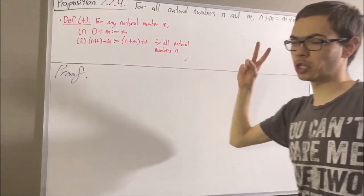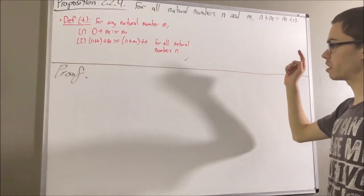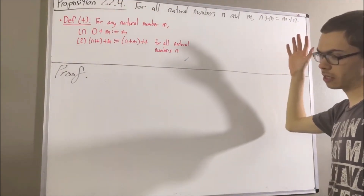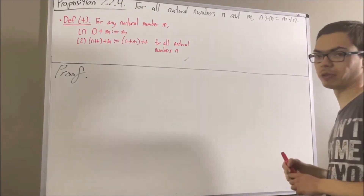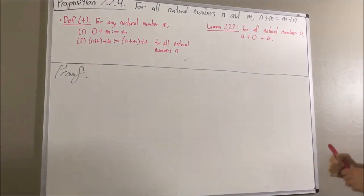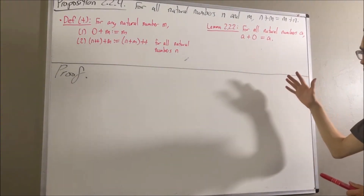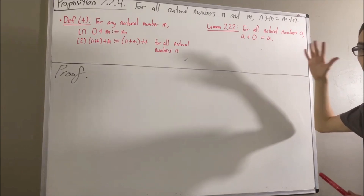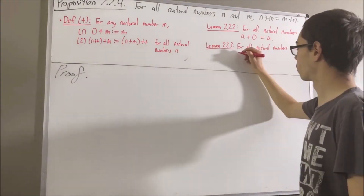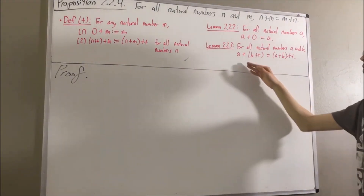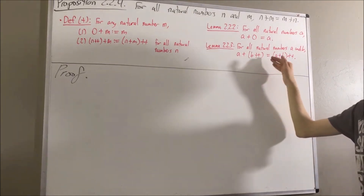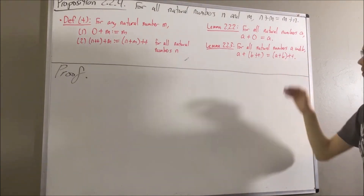In proving this, we are going to rely on two lemmas. The first lemma is: for all natural numbers a, a plus 0 is equal to a. The second lemma is: for all natural numbers a and b, we have that a plus the successor of b is equal to the successor of a plus b.